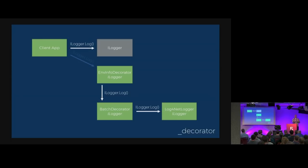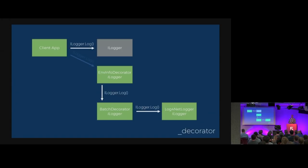A very common scenario would be caching: you have a repository to get data with no caching built in, because that's not its concern, and then you add a decorator on top that has caching built in. You can add and remove the cache as you feel like it — which is kind of neat. So it's a wrapping thing, just like the adapter, but instead of adapting from one interface to another, it has the same interface as the thing it wraps but adds functionality on top. Not many people have tried it, but it's actually a neat pattern — very simple but offers a lot of flexibility.